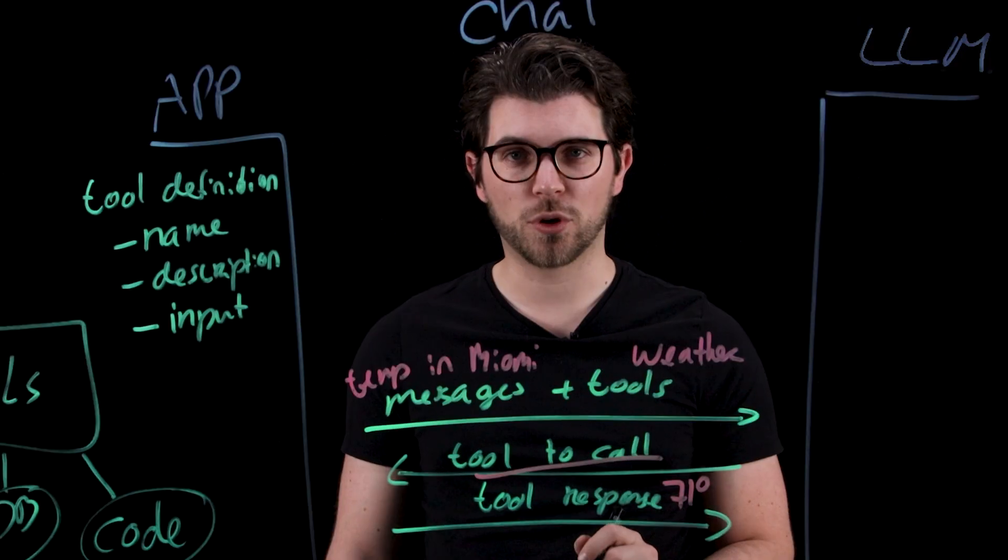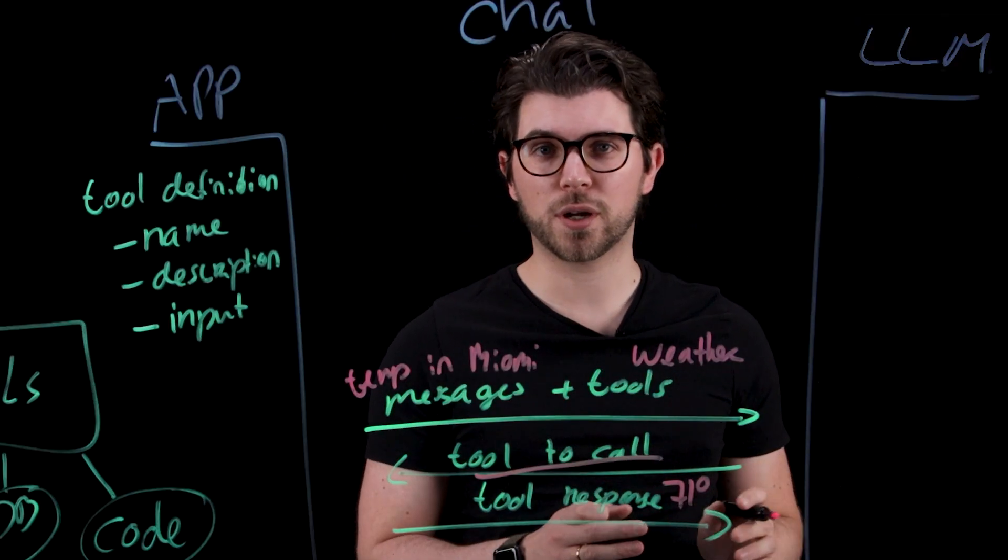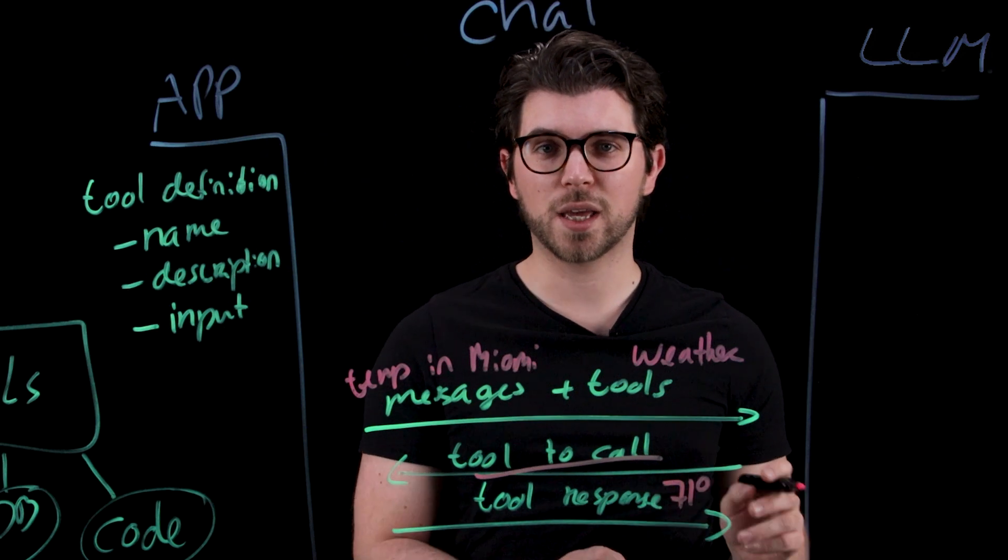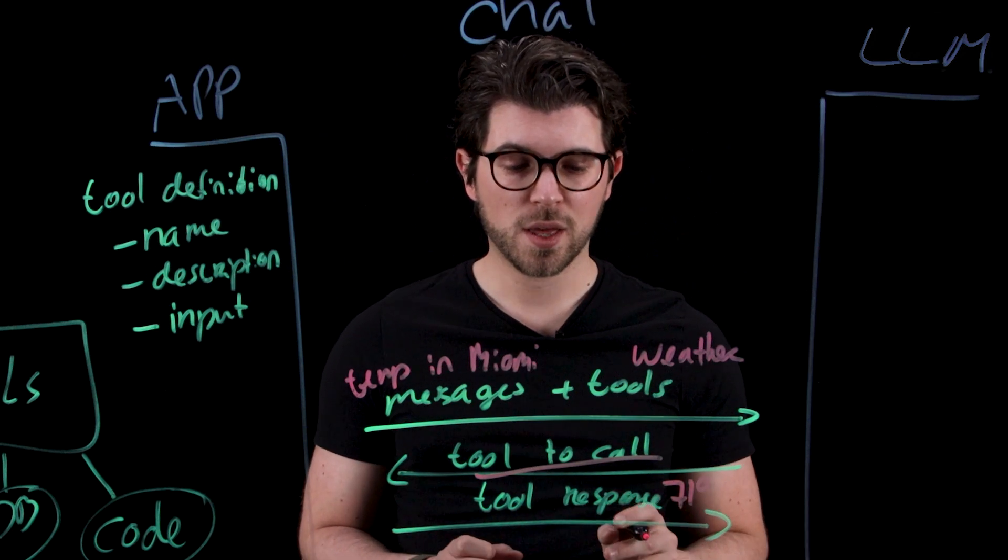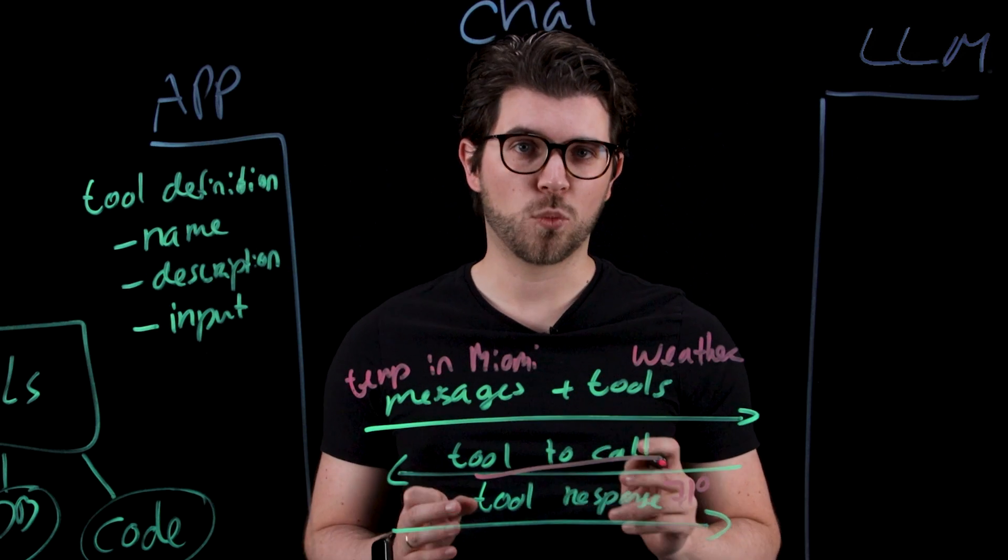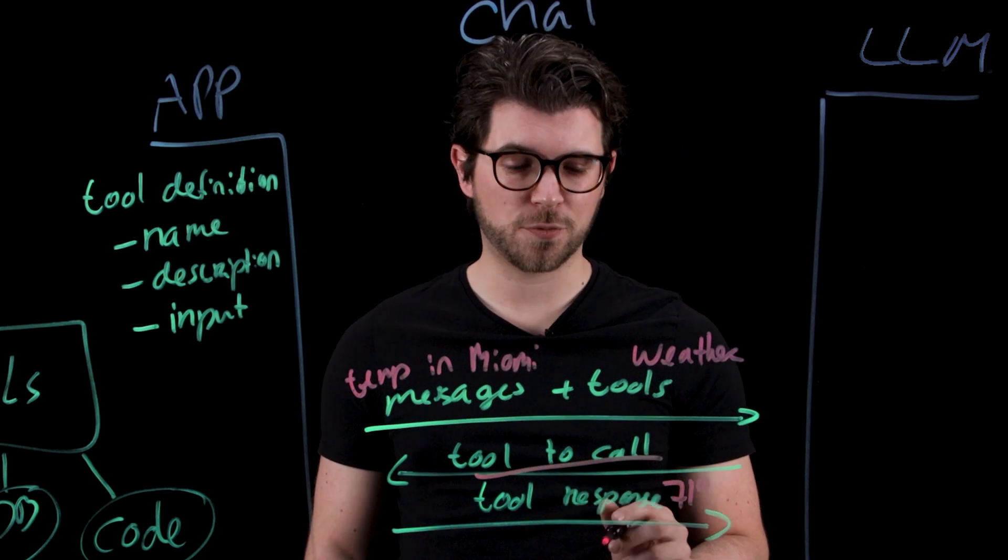So let's say it would be 71 degrees. The LLM will look at the tool response and then give the final answer which might be something like the weather in Miami is pretty nice, it's 71 degrees.